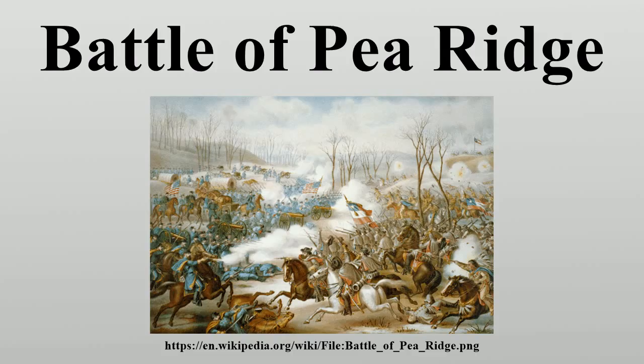Van Dorn was aware of the federal movements into Arkansas and was intent on destroying Curtis' Army of the Southwest and reopening the gateway into Missouri. He intended to flank Curtis and attack his rear, forcing Curtis to move north or otherwise be encircled and destroyed. Van Dorn ordered his army to travel light, each soldier carrying three days' rations, 40 rounds of ammunition, and a blanket. Each division was allowed an ammunition train and an additional day of rations. All other supplies, including tents and cooking utensils, were to be left behind.